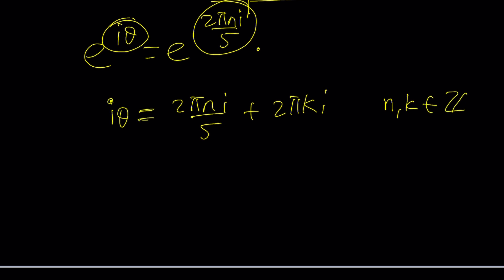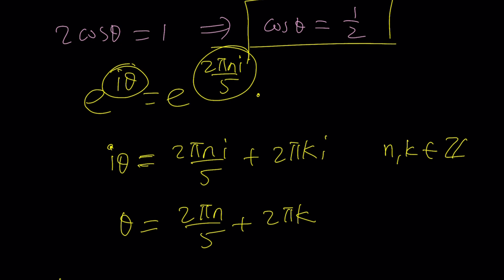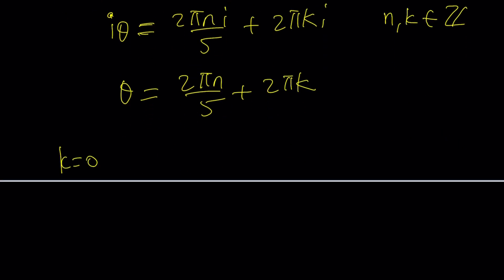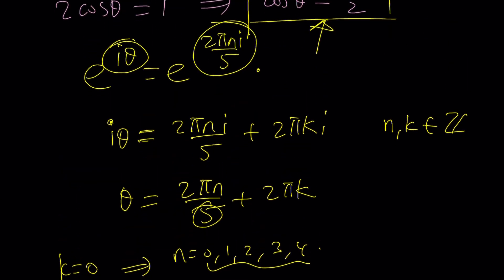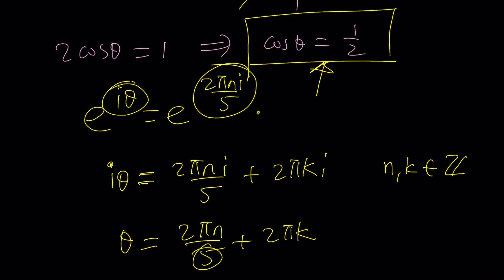We divide everything by i. That'll give us theta equals two pi n over five plus two pi k. If k is zero, n is zero, then you'll get zero. But zero doesn't satisfy cosine theta equals one half. If k is zero, running through n values zero, one, two, three, four, multiples of two pi over five, that's like 72 degrees. None of the multiples, because they're relatively prime to five, will get an angle whose cosine is one half. So what is going on here? There's something wrong with this.